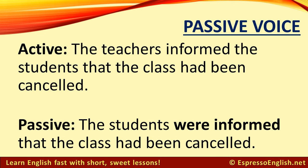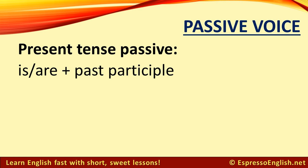Active: The teachers informed the students that the class had been canceled. Passive: The students were informed that the class had been canceled. To form the passive voice in the present tense, use 'is' or 'are' plus the past participle.